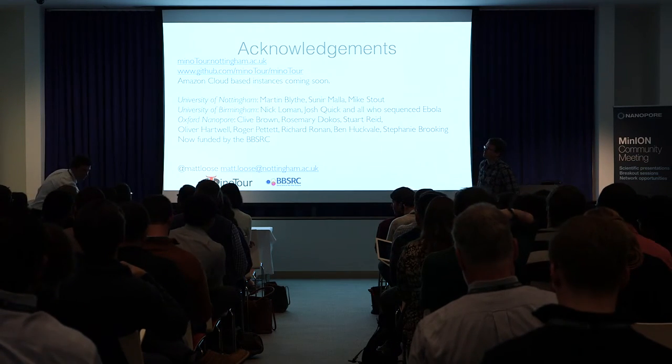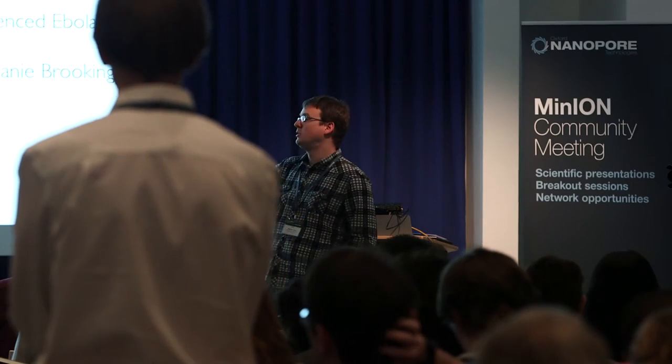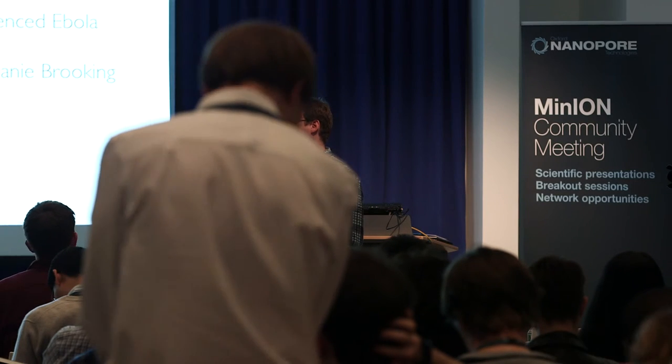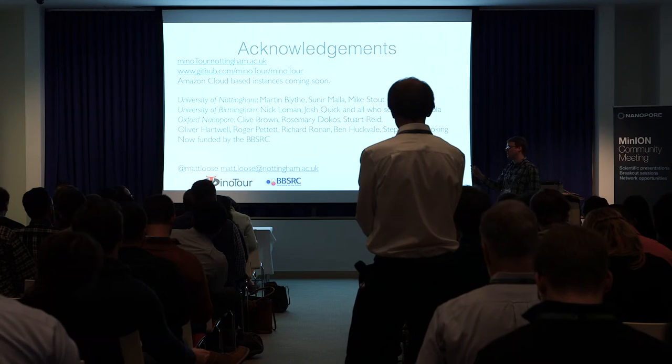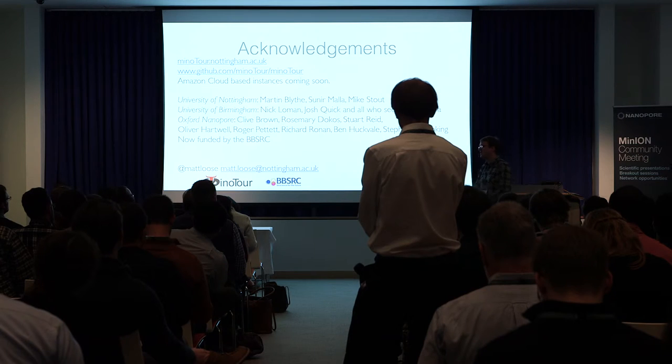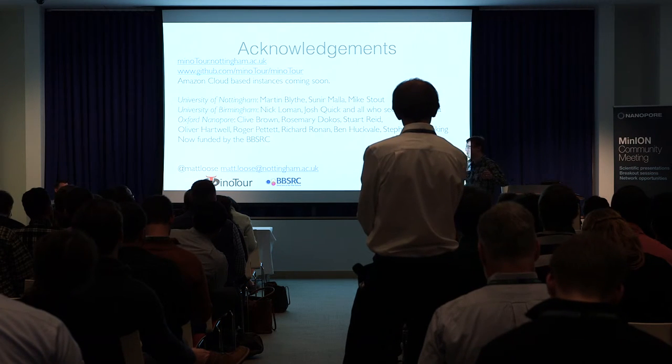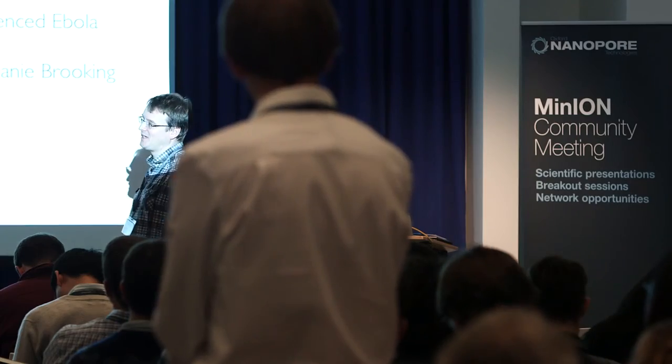Question: For your Read Until method, are you simply using alignment or a k-mer strategy? Answer: Just using alignment at the moment. For Read Until, you want to map in as short a number of events as possible, because the faster you can make that decision the better the benefit gained. At the moment we're going from about 250 events — you can probably get to less than that, I just haven't had the confidence to try it yet.